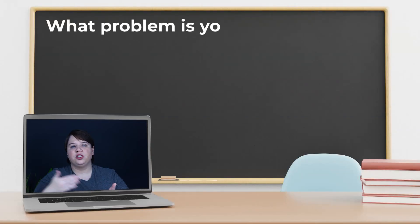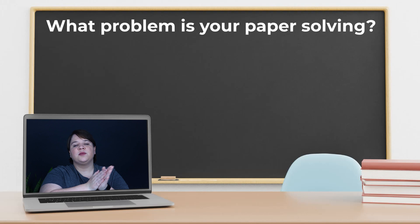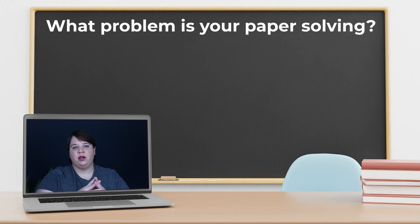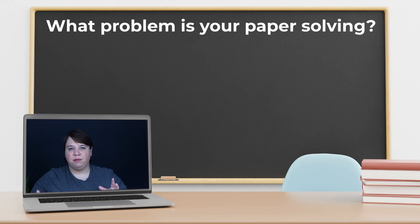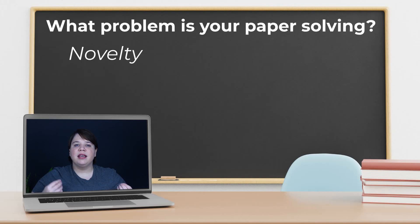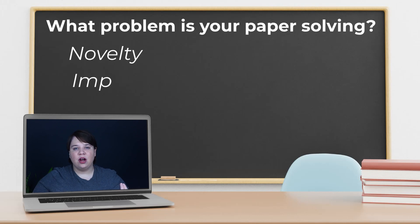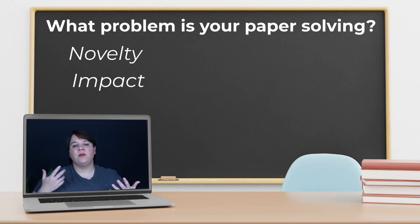Once you've answered those two questions, the third question you want to answer is: what problem is your paper solving? This is specifically telling the reader why your specific paper is important to read. They need to know the problem it's going to solve before they hear how you solve it. This very quickly shows anyone the novelty of your paper, and it immediately shows the impact and novelty, which makes it much easier to get accepted and for readers to care about it and cite it later on.